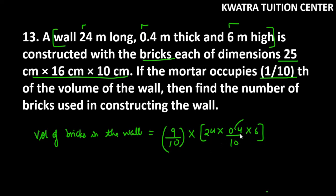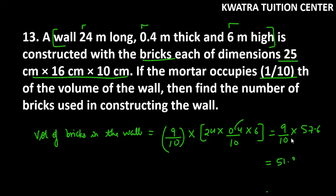We remove the decimal point and reduce the values, giving a wall volume of 57.6. Then 9 over 10 into 57.6 gives us 51.84 meter cube. This is the volume of bricks in the wall.